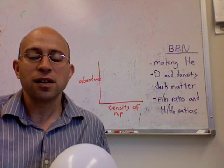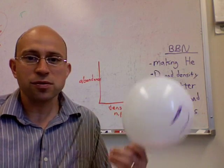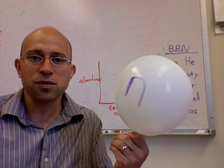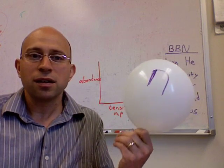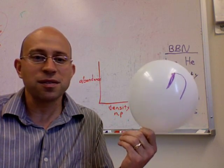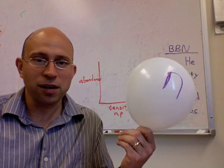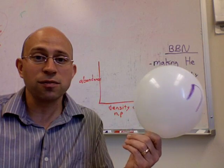One is that the Sun doesn't contain any free neutrons. So I have here a white balloon representing neutrons. A free neutron will decay in 15 minutes, so there aren't any free neutrons in the Sun. The Sun's been around for billions of years, they all would have decayed already.